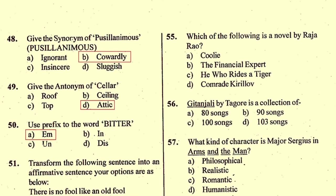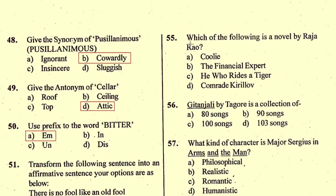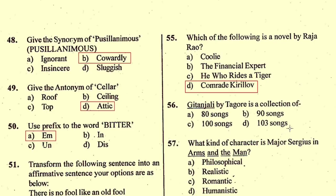Question number 55: Which of the following is a novel by Raja Rao? The right option is D, 'Comrade Kirillov'. Question number 56: Gitanjali by Tagore is a collection of — the correct option is D, 103 songs.